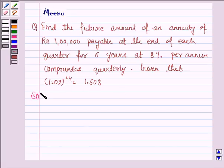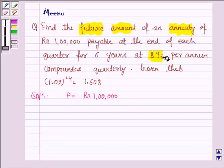Let's move on to the solution. We have to find the future amount of the annuity of Rs 1,00,000. The principal P is Rs 1,00,000 and the rate is given as 8% per annum.